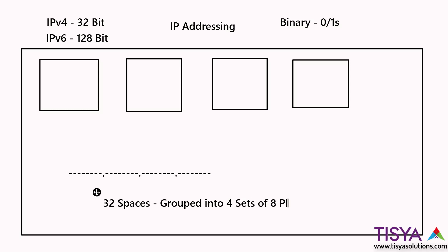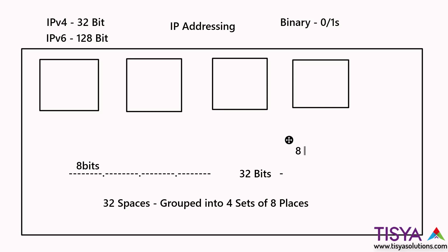To keep it simple, each of those 32 places can be given a zero or a one. The total number of unique combinations per octet follows basic permutation and combination. With eight bits in each octet, the total number of ways to fill eight places with zeros and ones is 2 to the power of 8, which gives 256 combinations.